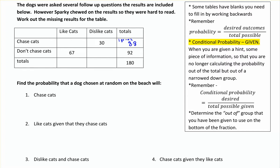So there are 88 dogs that chase cats. And there are multiple places we can go from here. I might look at the don't chase cats row — I know I've got a total of 92 of them. If 67 of them like cats, the number that don't like cats is going to be that subtraction: 92 minus 67, and in this case we get 25.